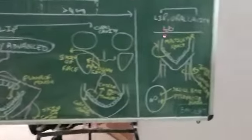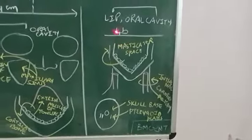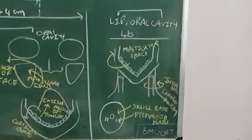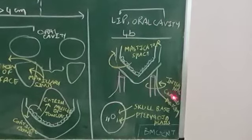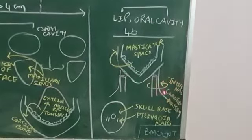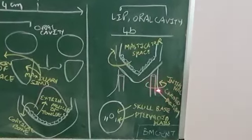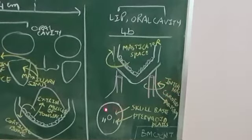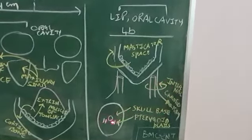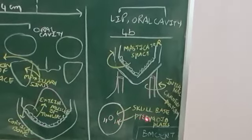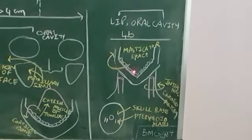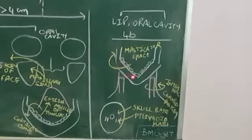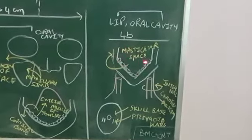And T4B if you take, more common for more of the advanced tumors, lip and oral cavity. So first to remember here is internal carotid artery. Fix it in your mind. Internal carotid artery, encased internal carotid artery. And skull base is involved, and pterygoid plates are also involved. Skull base and pterygoid plates. And along with that, because this is the lip and oral cavity, the masticator space.